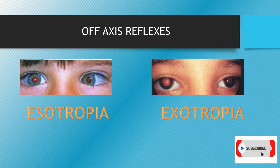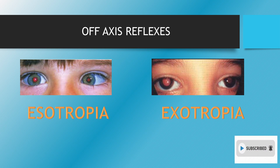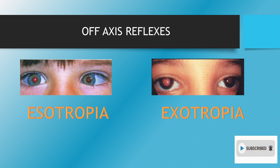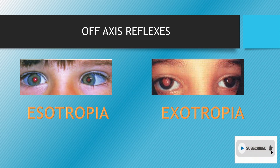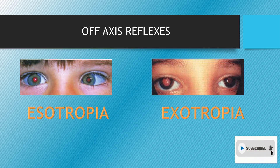The test also gives information about the eso and exo positions, such as when the eye has off-axis reflexes in esotropia and exotropia. In esotropia, we see the eye is deviated nasally inward, and the eye with esotropia will have a brighter red reflex. In exotropia, the deviated eye will also have a brighter red reflex, giving a clue that the eye is most likely amblyopic and requires immediate intervention.